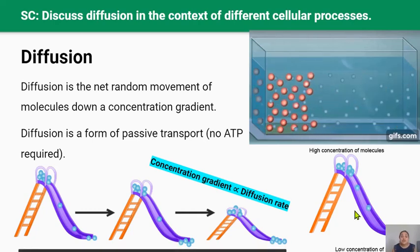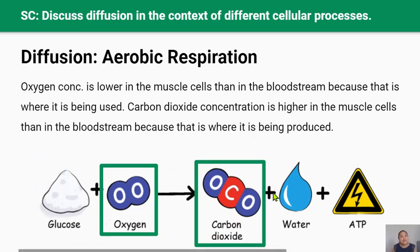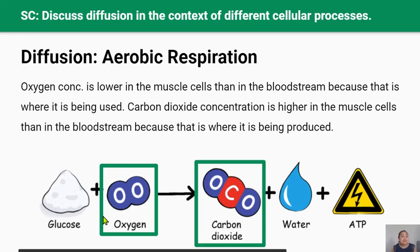Now let's go through some examples of diffusion in the context of different cell processes. How does diffusion play a role in aerobic respiration? Aerobic respiration is the process of producing energy or ATP in plants and animals for growth, movement, and survival. It happens in organelles called mitochondria and uses glucose and oxygen to release this energy. Oxygen diffuses from the bloodstream through the cell membranes of muscle cells, where it's used in the mitochondria to carry out aerobic respiration — because the concentration of oxygen is much higher in the bloodstream and much lower in the cells as it's constantly being used up.